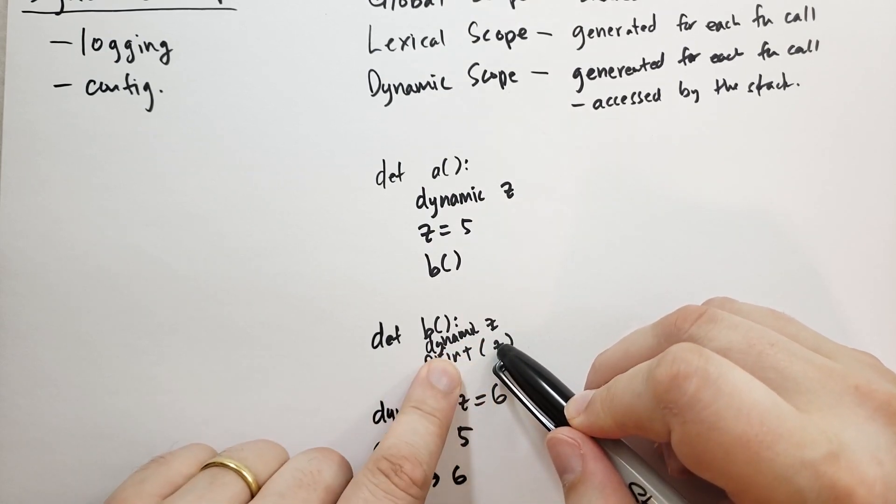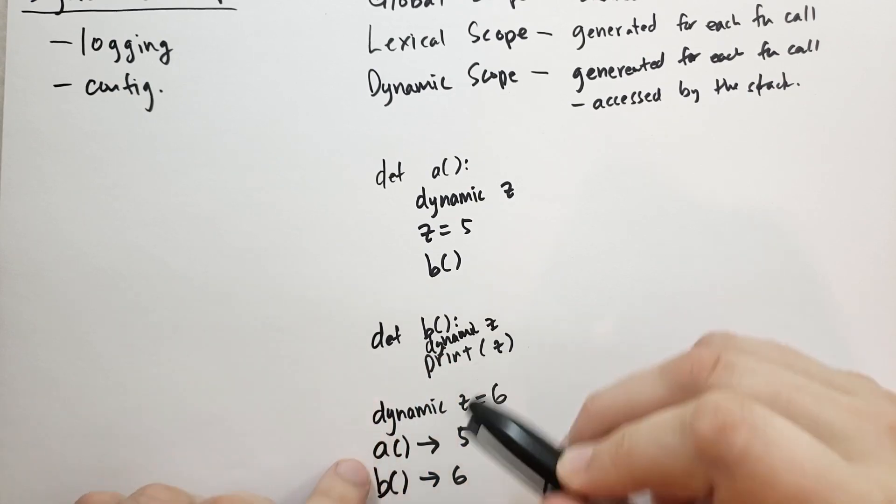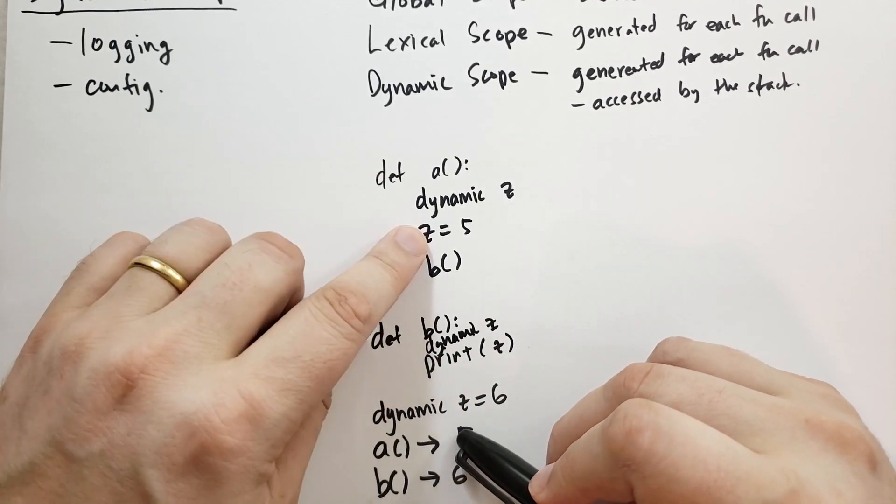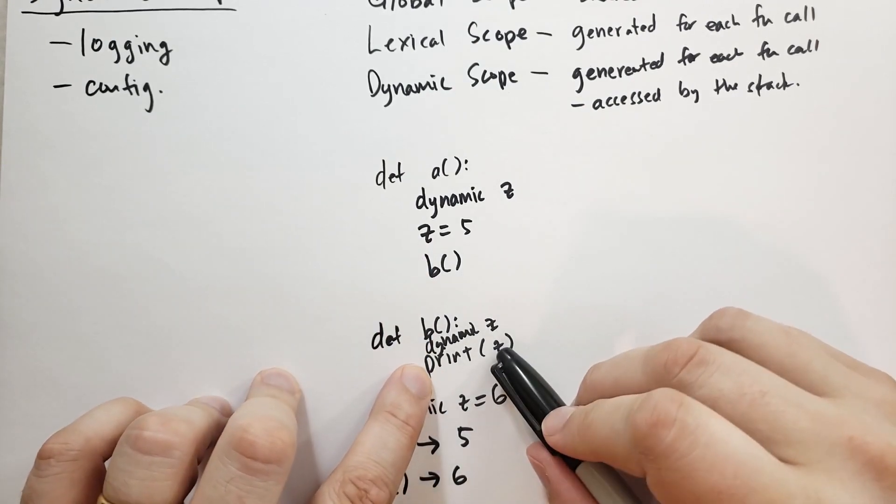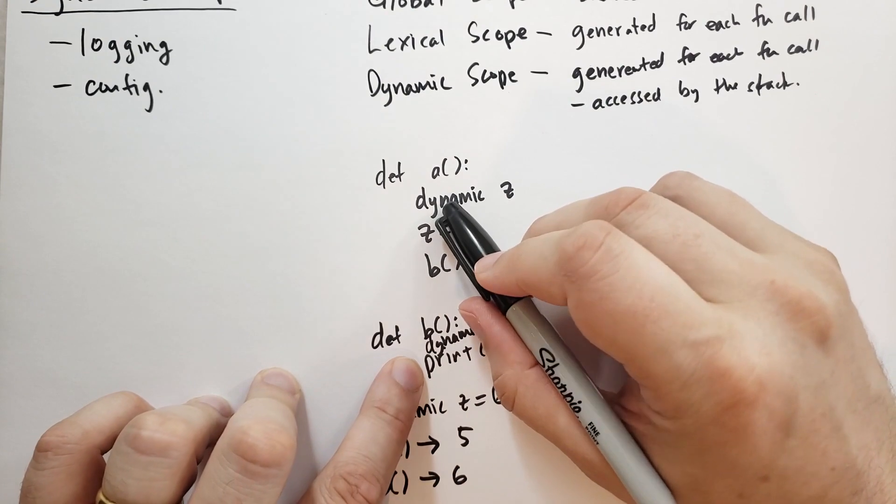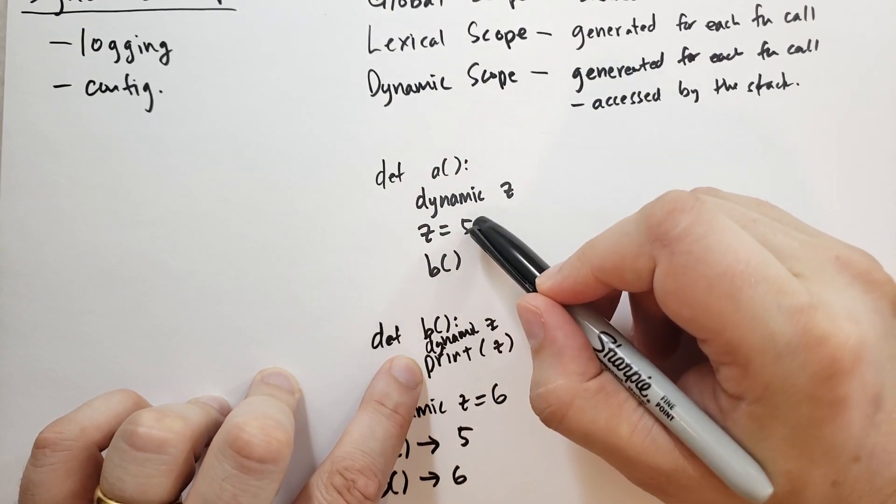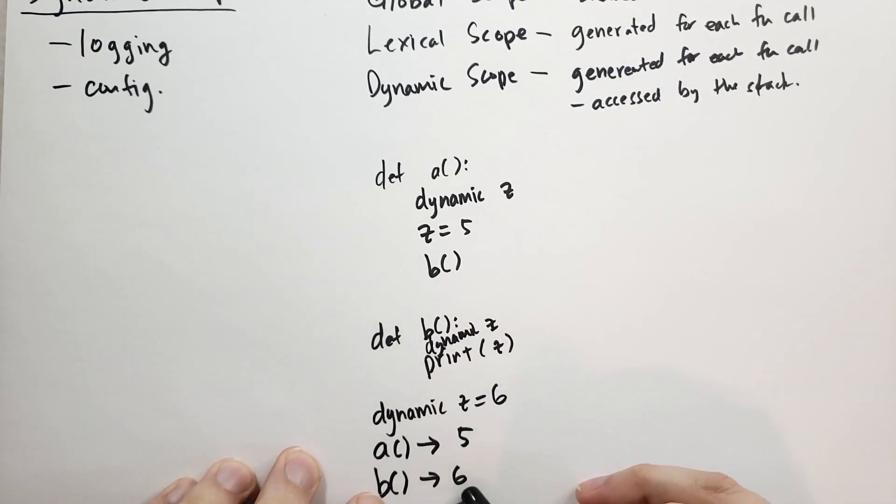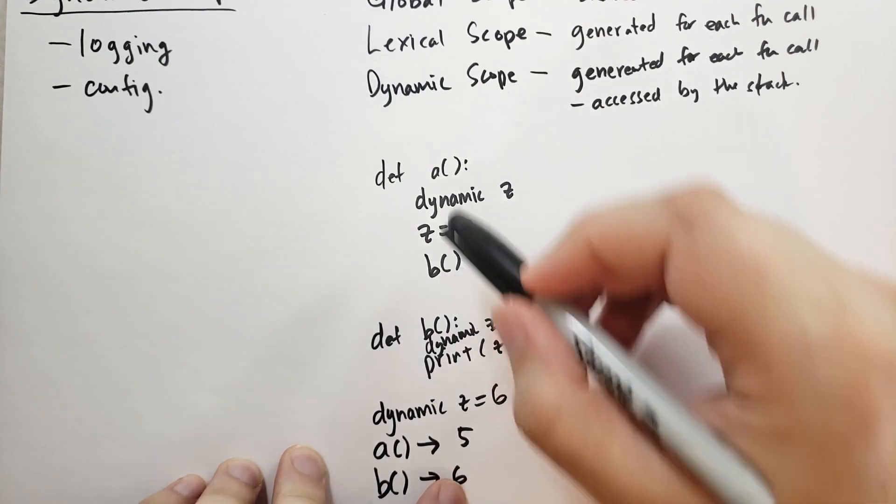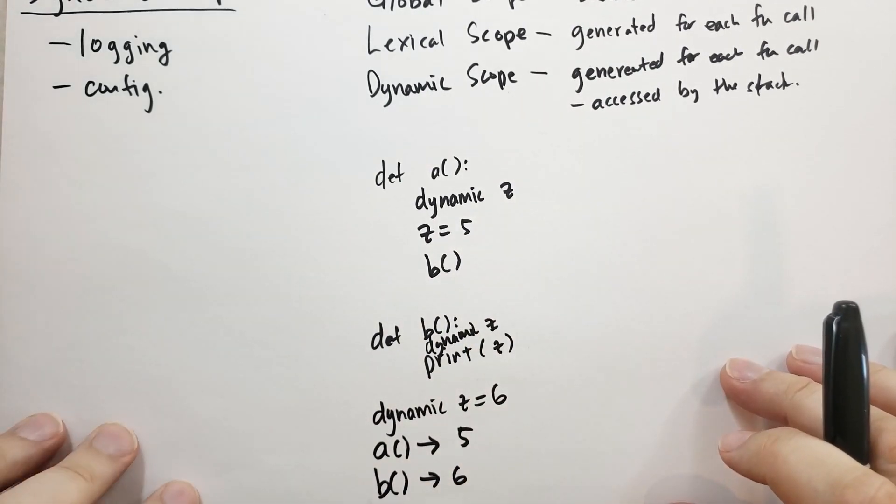Look at the function that called this function and then ask it what the dynamic z is. So in this first call, we're calling a, sets dynamic z to five, and then it calls b. In the second function, it's going to look up to the caller. In this case, a was the caller, and so it's going to say that z is five and print that. When you're calling it directly, however, you've already set z equal to six. So it's only looking at this code. It's not looking at a because it wasn't called from a.